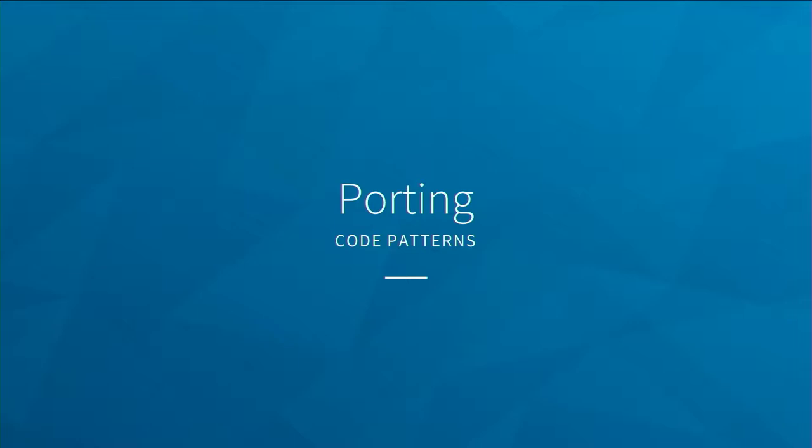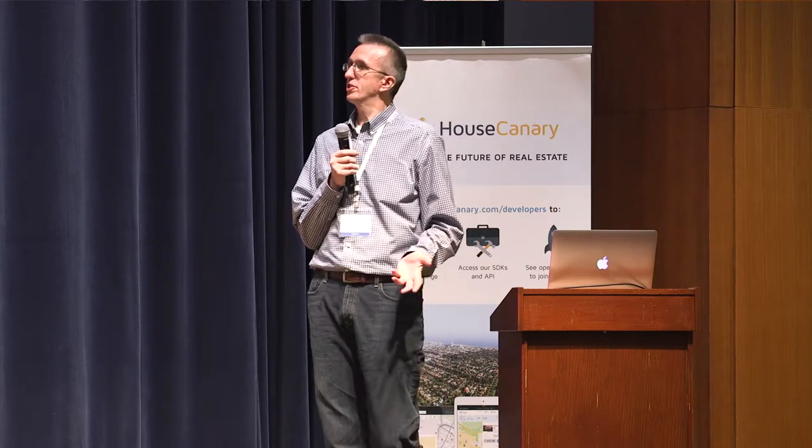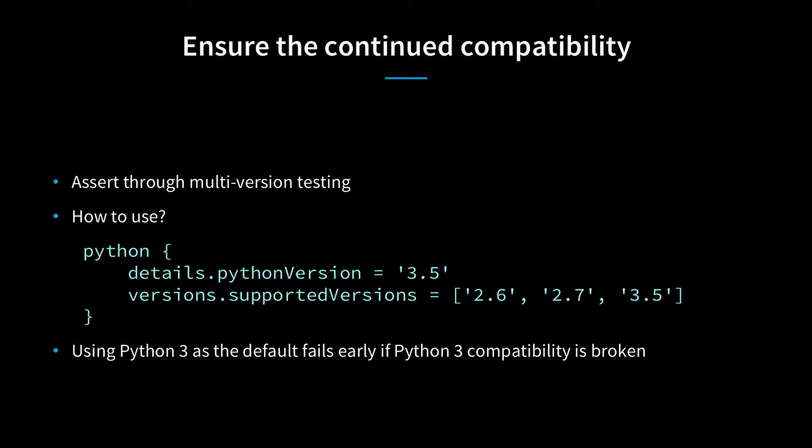Finally we reached the porting stage. How did we start? We looked at the dependency graph and started from the bottom up. We modernized the code by running Python Modernize, then ran the tests and found what else needed to be fixed manually. Then we upgraded the PyGradle version, provided the correct environment markers, bumped the major version of the package, released it, and went up the graph.